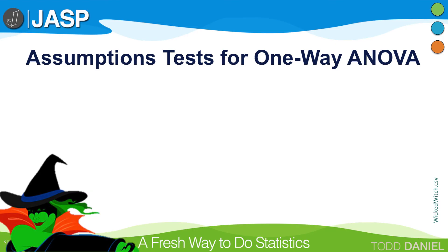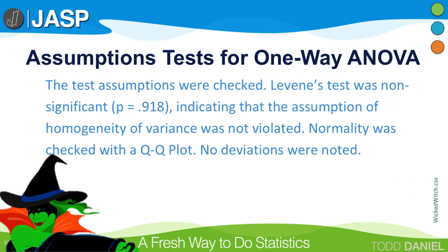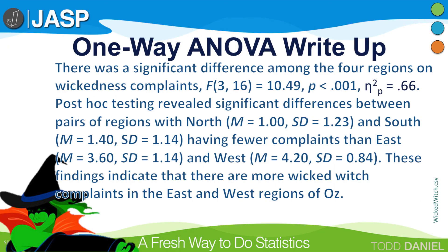Here is how we would write up our results in APA style. For a full write-up, I would mention the test assumptions that were checked: Levene's test was non-significant, indicating that homogeneity of variance was not violated, and normality was checked with a Q-Q plot with no deviations noted. To report the ANOVA, we report F followed by the degrees of freedom between and within — 3 and 16 — then the F-value of 10.49, the p-value, and the partial eta squared (the same as eta squared for a one-way ANOVA), along with means and standard deviations for each group.